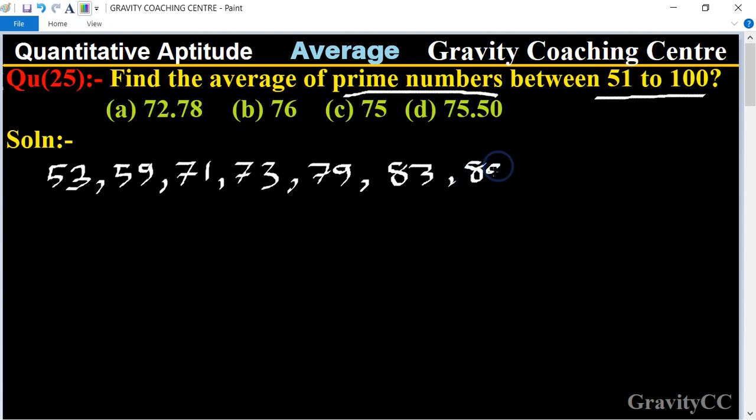So these are the prime numbers between 51 to 100. Therefore, their average equals: